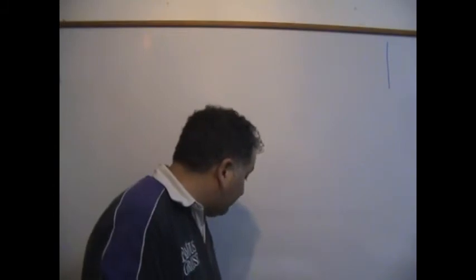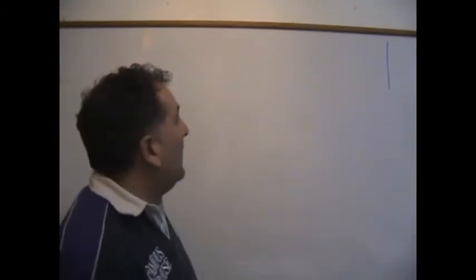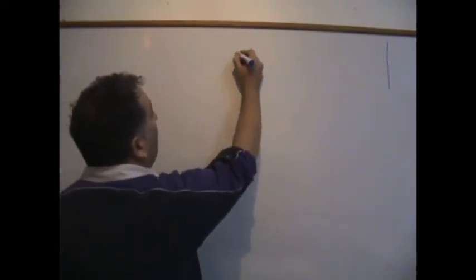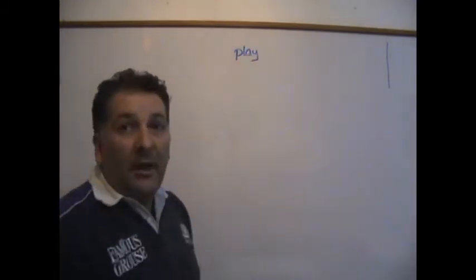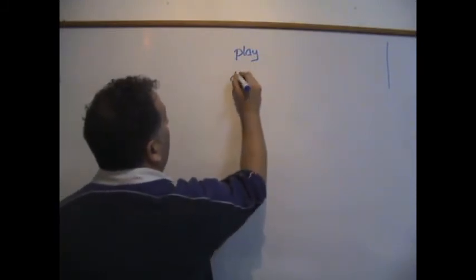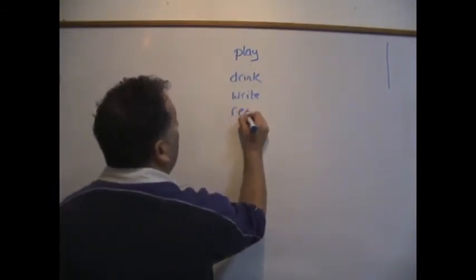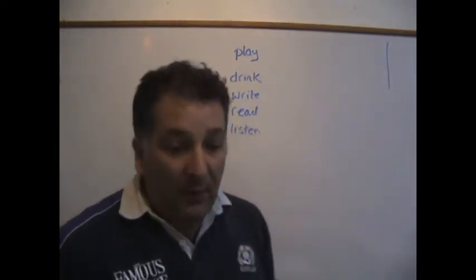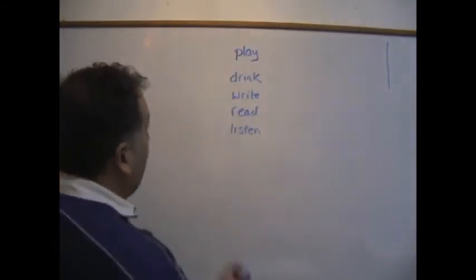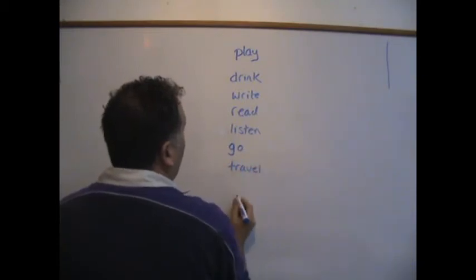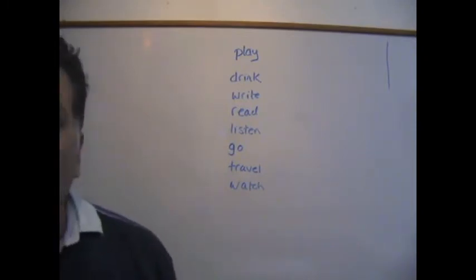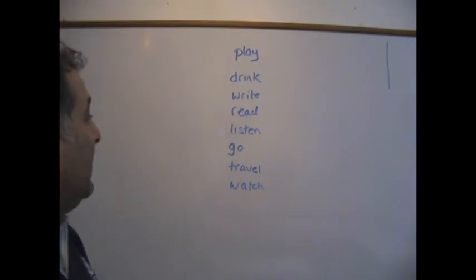So the first thing I would do is get a pen and then ask my students to tell me some verbs in English — some action verbs, doing verbs, things that we do. We might construct a list: to begin with the verb play, then drink or write, then read and listen. We go around the room and each student can tell me a verb — they might come up with go, travel, and watch.